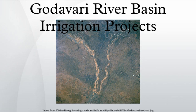The Godavari River has its catchment area in seven states of India: Maharashtra, Telangana, Chhattisgarh, Madhya Pradesh, Andhra Pradesh, Karnataka, and Odisha.